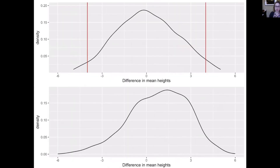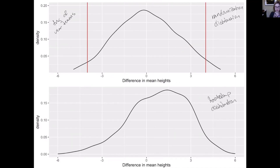Now we start making connections by lining up our bootstrap distribution and our randomization distribution for the tug-of-war teams. I've lined them up so the axes are exactly the same. Looking at our observed sample statistic in the randomization distribution, it would be very common if the null were true — causing us to fail to reject the null hypothesis. And when we look at the bootstrap distribution for reasonable values we could have observed, we get anything from about negative 3 to positive 4, centered around the value we observed — that's always the middle of our confidence interval.